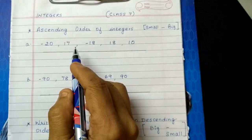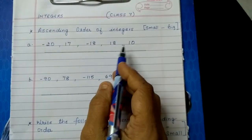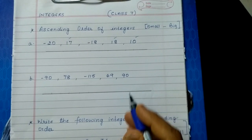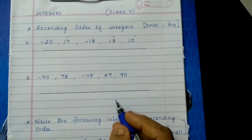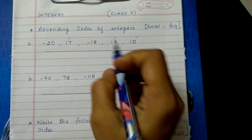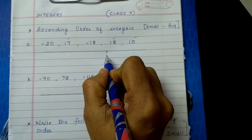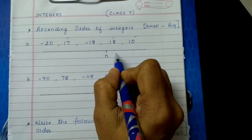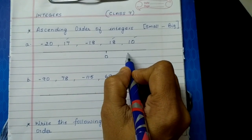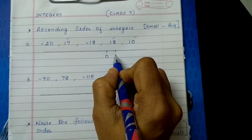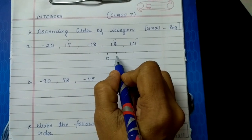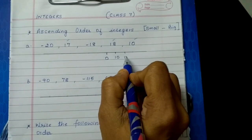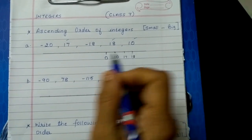First let us see what are the positive numbers. 17, 18 and 10 are the positive numbers, so they will come towards the right of 0. What will come first in the positive numbers? 10 will come first, then 17 and then 18.